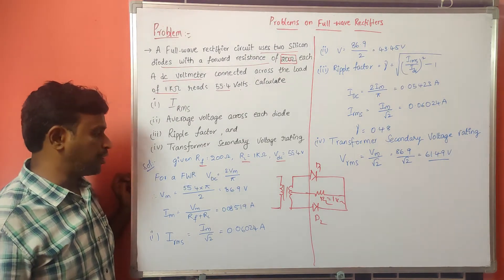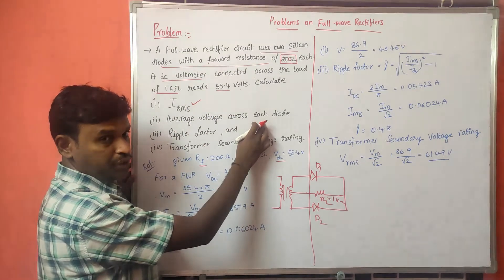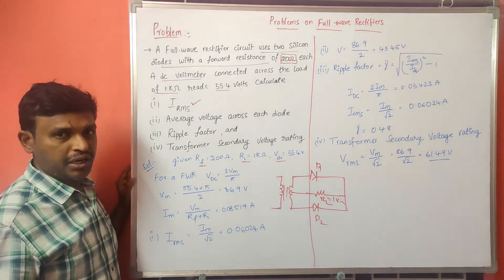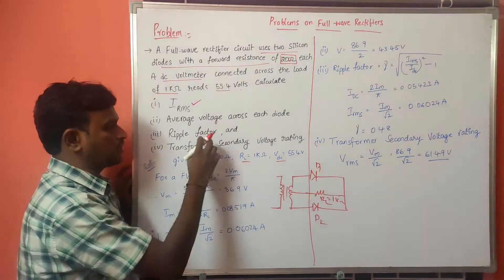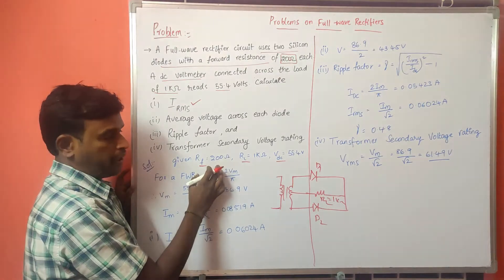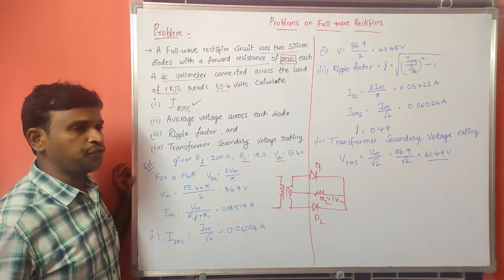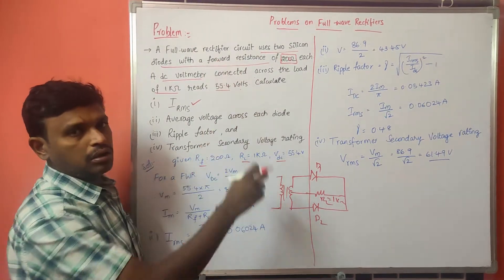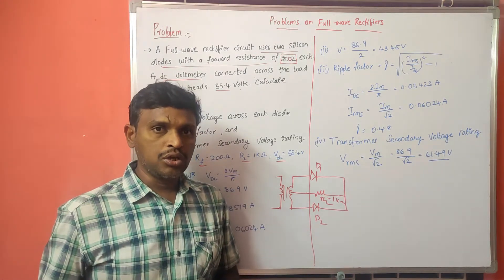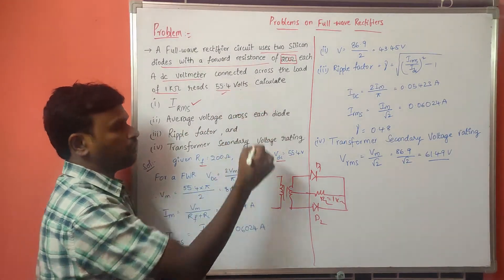We have to find out the IRMS value, average voltage across each diode, ripple factor, and transformer secondary voltage rating. Given: RF = 200 ohms, RL = 1 kilo ohm, VDC = 55.4 volts. The maximum voltage Vm is not given, so we have to find it from VDC.